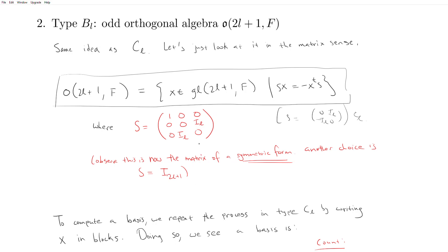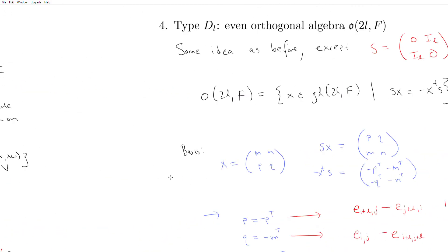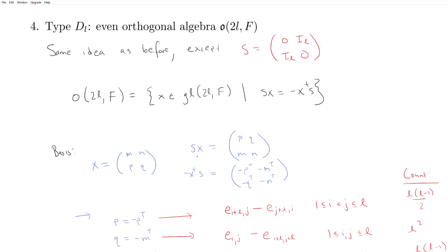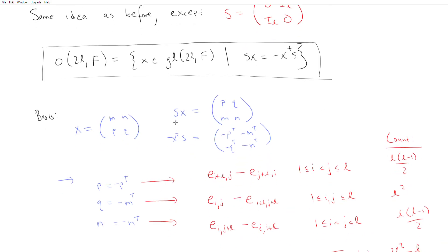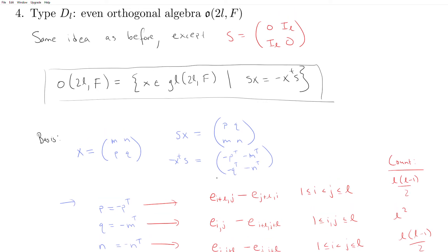Type D_l is the even orthogonal algebra. Rather than 2l+1 we work with 2l, and the definition is the same as before but with S being the symmetric matrix with ones along the anti-diagonal — a 2l-by-2l matrix. Computing a basis yields a dimension of 2l² minus l, which is a little smaller than types B and C with respect to l.